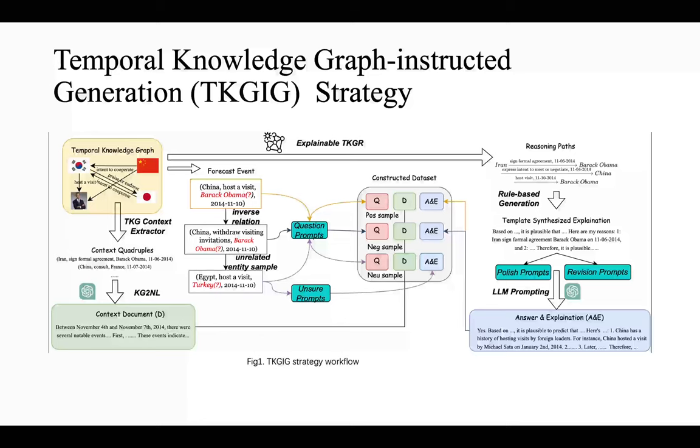These reasoning paths are then converted into natural language explanations using a two-level prompting technique. The whole process generates a complete training instance, comprising the context document, explanation, and the original query transformed into a question.